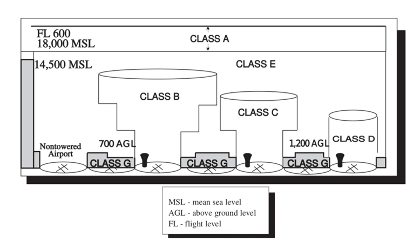Military operation areas (MOAs) consist of airspace with defined vertical and lateral limits established for the purpose of separating certain military training activities from IFR traffic. Whenever an MOA is being used, non-participating IFR traffic may be cleared through an MOA if IFR separation can be provided by ATC; otherwise, ATC reroutes or restricts non-participating IFR traffic. MOAs are depicted on sectional, VFR terminal area, and en route low altitude charts and are not numbered. However, the MOA is further defined on the back of the sectional charts with times of operation, altitudes affected, and the controlling agency.